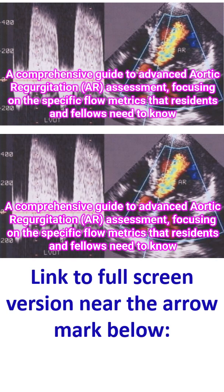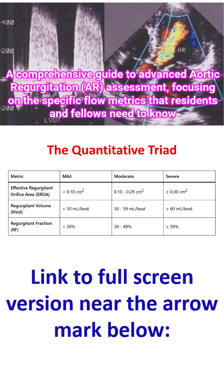Assessing chronic aortic regurgitation requires a multi-parametric approach. For residents and fellows, the challenge lies in moving beyond simple color Doppler and mastering the quantitative metrics that dictate surgical timing. The following guide breaks down the gold standard flow metrics and quantitative assessments used in advanced echocardiography. The American Society of Echocardiography emphasizes three primary quantitative measures to define severe aortic regurgitation.